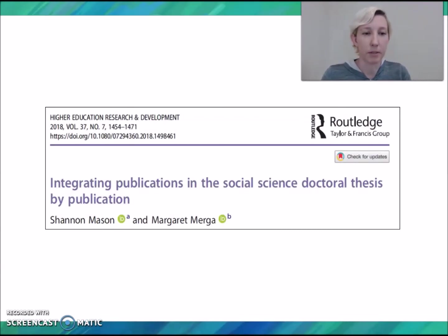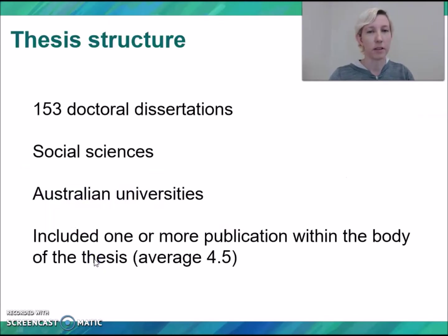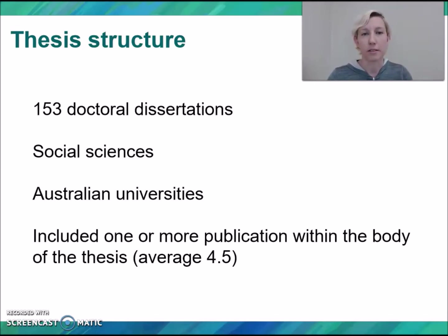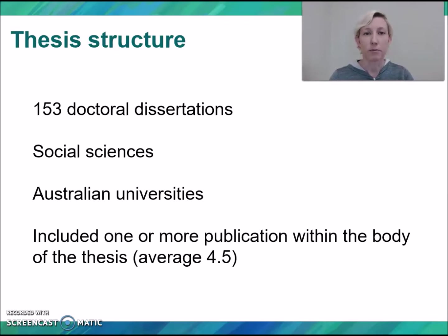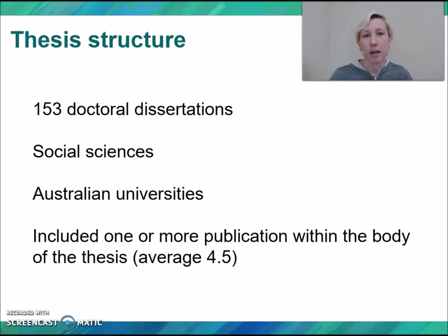Today's data comes from a paper published in 2018. Basically, what we did is gather as many theses by publication as we could — we found about 600 or so — and we analyzed those from the social sciences and a few from the humanities. We focused on this area because this is the space where the TBP is growing and there wasn't a lot of information or advice for students in the social sciences. This paper does focus on the social sciences, but I think the structures can be applied to any field.